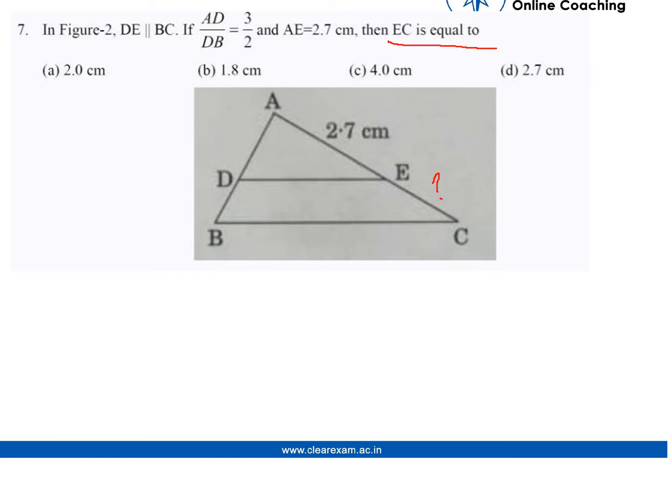Since DE and BC are parallel to each other, the formula is AD/DB equals AE/EC.